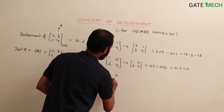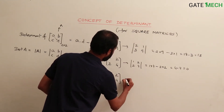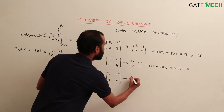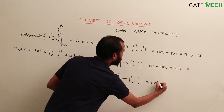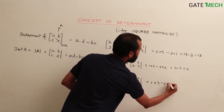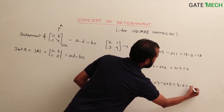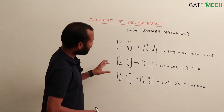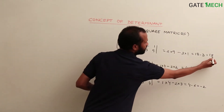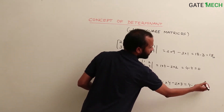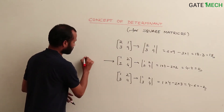One more matrix: 1, 2, 3, 4. Its determinant equals 1 into 4 minus 2 into 3, which is 4 minus 6, equal to minus 2. So here we have three different matrices where the determinants came to be 15, minus 2, and 0. In such cases where the determinant is 0, such matrices are called singular matrices.